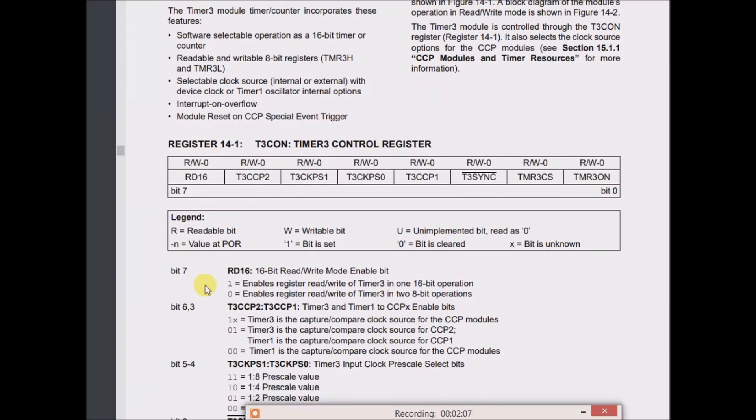He sent all zeros to this register, so what does that exactly mean for the T3CON, timer 3 control register? This first, actually most significant bit, bit 7, is the 16-bit read/write mode enable bit. He's sent a 0 there, so this enables register read or write of timer 3 in two 8-bit operations.